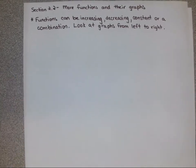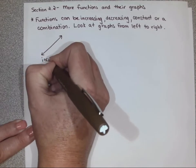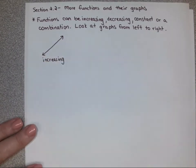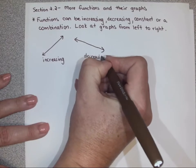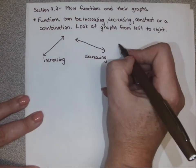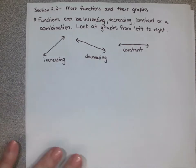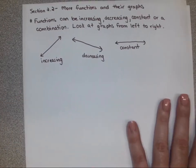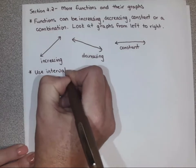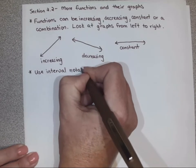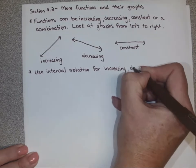We're going to look at a lot of graphs that have a combination of increasing and decreasing sections. But before we do, let's just look at lines — those are the simplest type of graphs. This line would be increasing because from left to right it's going up. This line is decreasing. And a constant line would just be flat, horizontal. We're going to use interval notation to describe when a graph is increasing, decreasing, and when it's constant.